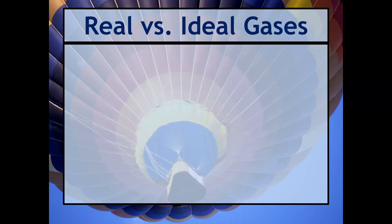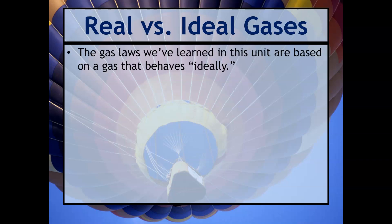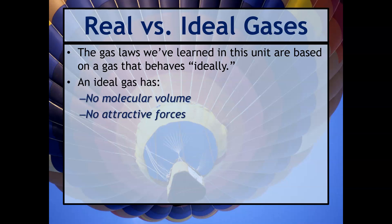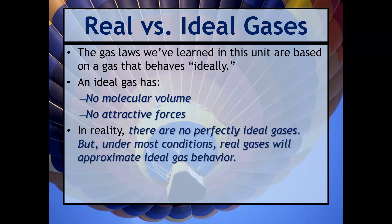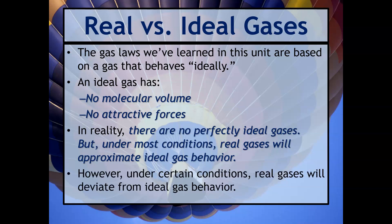The last section talks about real versus ideal gases. The gas laws we've learned in this unit are all based on the idea that gases behave ideally — meaning we assume there is no molecular volume and no attractive forces. In reality there are no perfectly ideal gases, but under most conditions our real gases will approximate ideal gas behavior. However, there are certain conditions where real gases will deviate from ideal behavior.